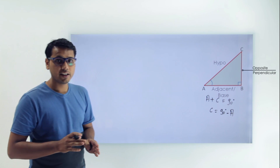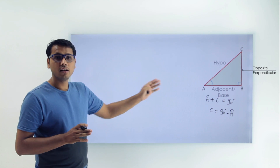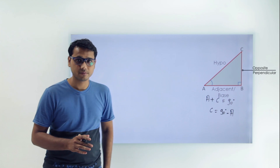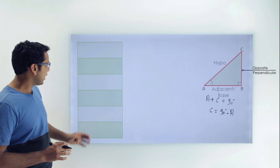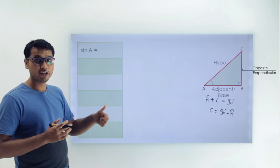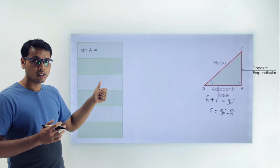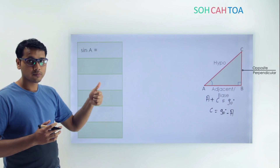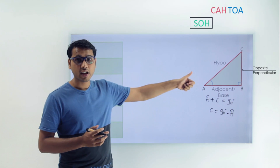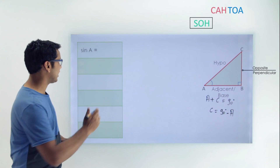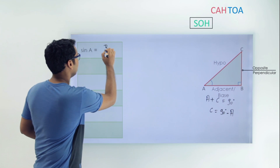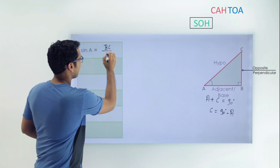Now we can write the trigonometric ratios for angle A. Let's draw a table for all six trigonometric ratios for angle A. First is sin A. Using SOHCAHTOA, sin is opposite upon hypotenuse. The opposite side is BC and the hypotenuse is AC, so sin A equals BC upon AC.